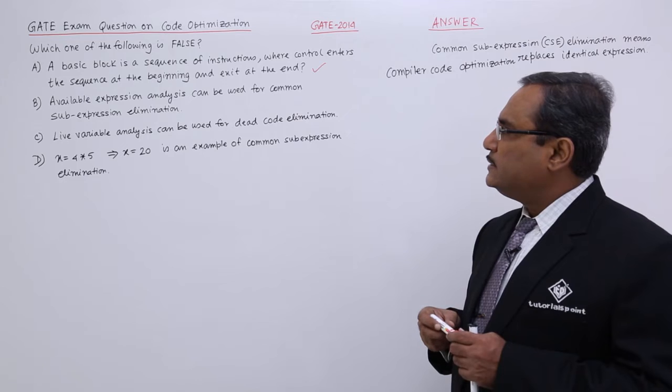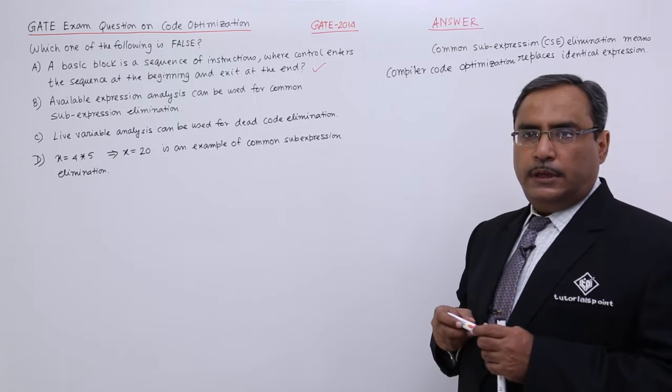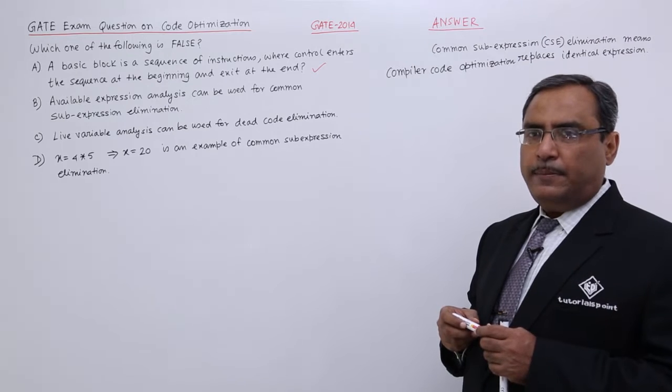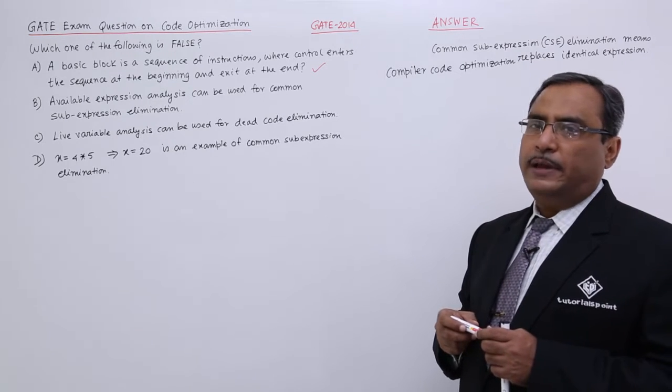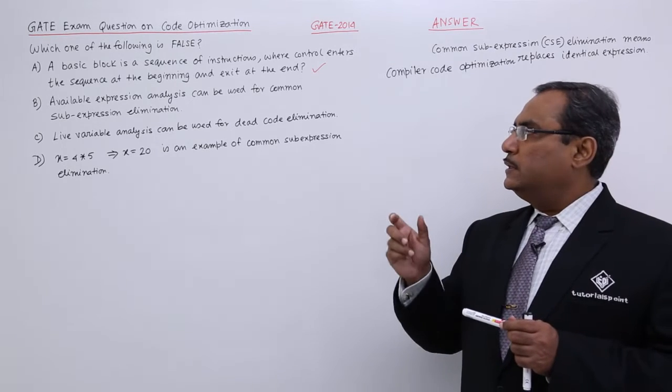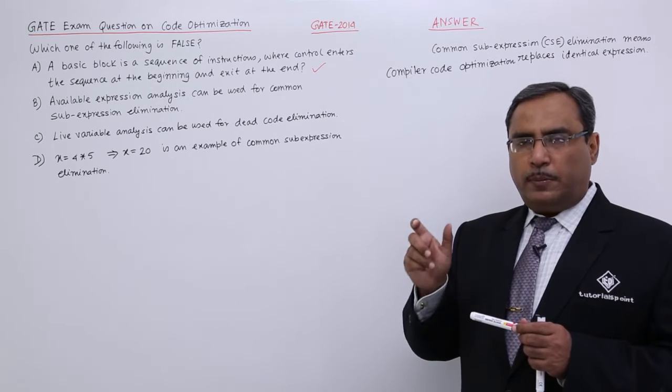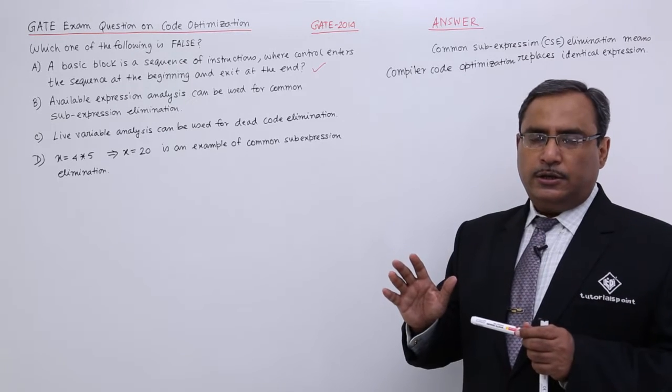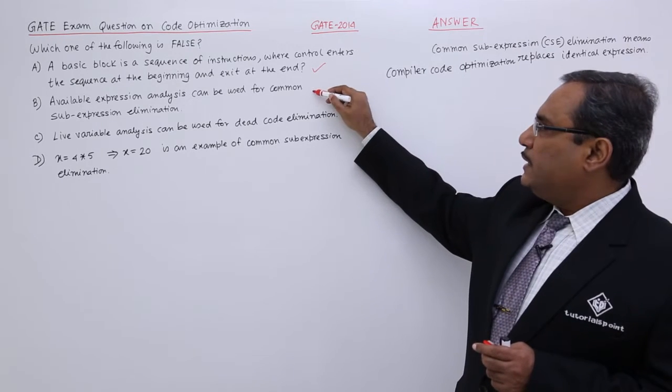Available expression analysis can be used for common sub expression elimination. In case of code optimization, we are having the code optimizer will eliminate common sub expressions. That means if one expression is common in multiple expressions, then in the case that expression has to be, the common sub expression has to be eliminated to reduce the complexity. So this particular statement is true.